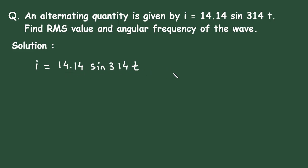Now, if we compare this with standard expression, the standard expression is i(t) equals Im sin omega t, and we know that omega equals 2 pi f. Therefore, i(t) equals Im sin 2 pi f t.